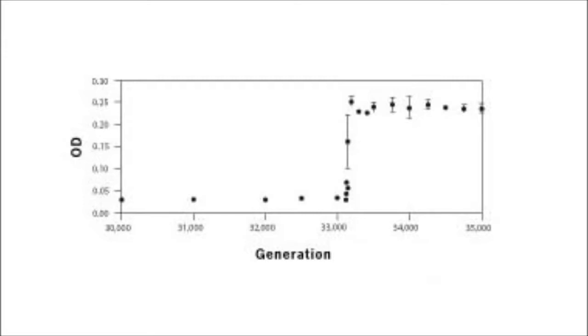Up to about generation 33,000, the average population density of tribe Ara Minus Three was coasting along at an OD of about 0.04, which was not very different from all the other tribes.